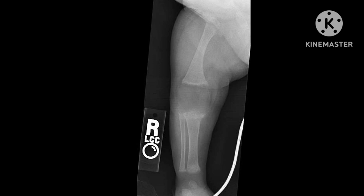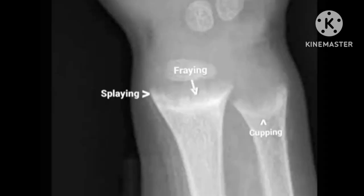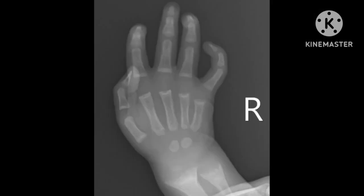In this radiograph you can see metaphyseal splaying, cupping, fraying, and generalized osteopenia. In this radiograph you can see fraying, splaying, and cupping of the distal radius and ulnar metaphyses and widening of the physis. In this radiograph you can again see cupping, fraying, and splaying of the ulnar and radius distal metaphyses and also the metacarpal metaphyses.